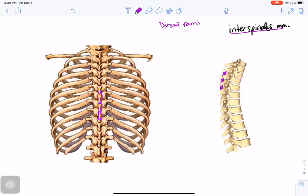The interspinales aid in extension of the vertebral column, but primarily they're small postural muscles stabilizing adjacent vertebrae.